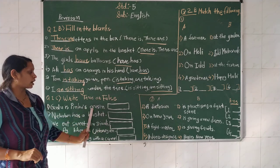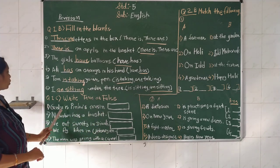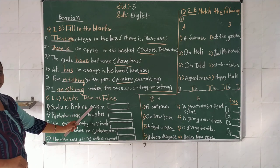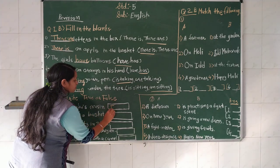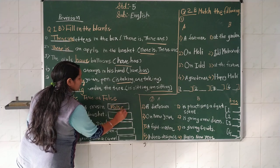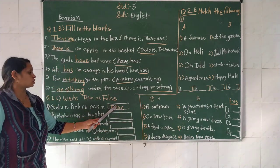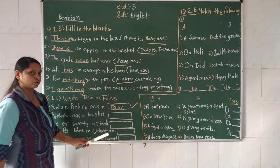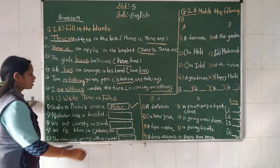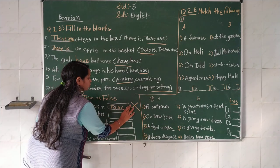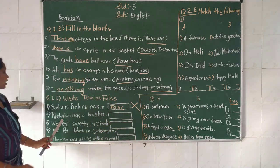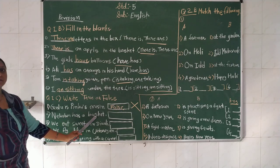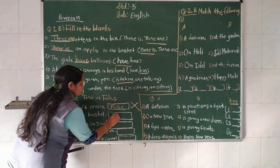True or false: 'Golu is Pinko's cousin.' - ગોળુ, પીંકોનો પિત્રાઈ ભાયબેન છે? - False. કારણ, Golu અને Pinko પિત્રાઈ ભાયબેન નથી, એ સગા ભાઈ-બહેન છે. True/False - True માટે ત્યાં 'true' લખો.